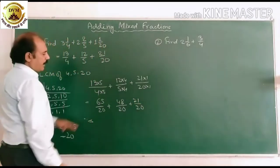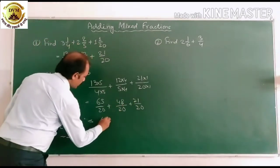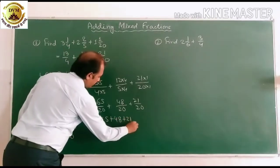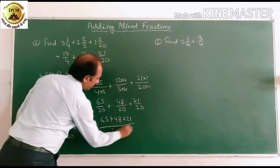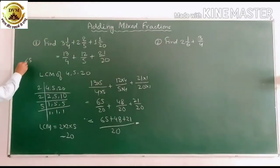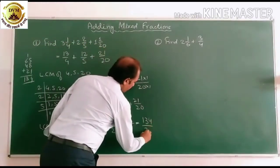Rule is that we have to add all the numerator and add the common denominator. So here 65 plus 48 plus 21 by 20 equals to 65 plus 48 plus 21. 8, 9, 44 carry 1, 10, 11, 12, 14. 8, 9, 5, 48, 4 carry 1, 6, 7, 11, 12, 13. 134 by 20.